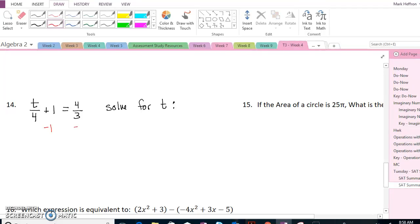First thing I would do is subtract 1 from both sides. So I have t over 4 equals 4 thirds minus 1. But I'm going to change that 1 into 3 thirds to make it a common denominator. And we know that 4 thirds minus 3 thirds is 1 third.